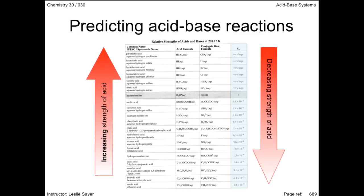If the acid strength is decreasing as you go down the page, then it's obviously increasing as you go up the page. And likewise, the bases increase their capacity to accept protons — that is, become stronger bases — as you go down the page.